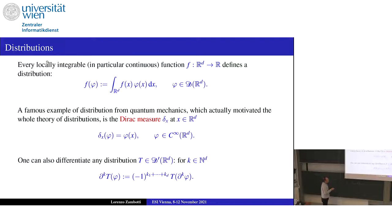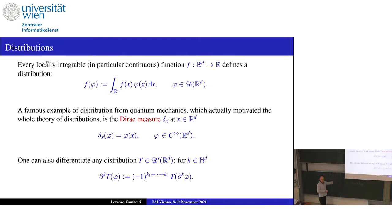A famous example is the Dirac measure from quantum mechanics, which is just the evaluation at a point — it is in fact a measure. You can always differentiate a distribution by formally integrating by parts and moving the derivatives to the test function. Derivatives are well defined for distributions. I mentioned at the beginning that g was a continuous function and in particular a distribution, and its derivative was maybe not a function but was a distribution.